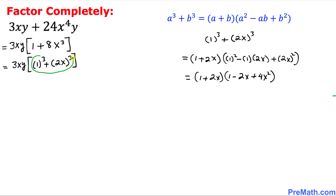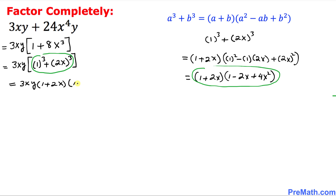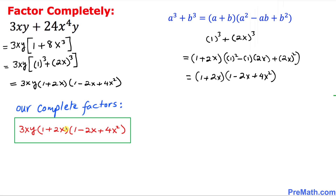So 1³ + (2x)³ has been factored. Replacing it, we get 3xy(1 + 2x)(1 - 2x + 4x²), and these are our complete factors — that is our final answer. Thanks for watching, and please don't forget to subscribe to my channel for more exciting videos. Bye.